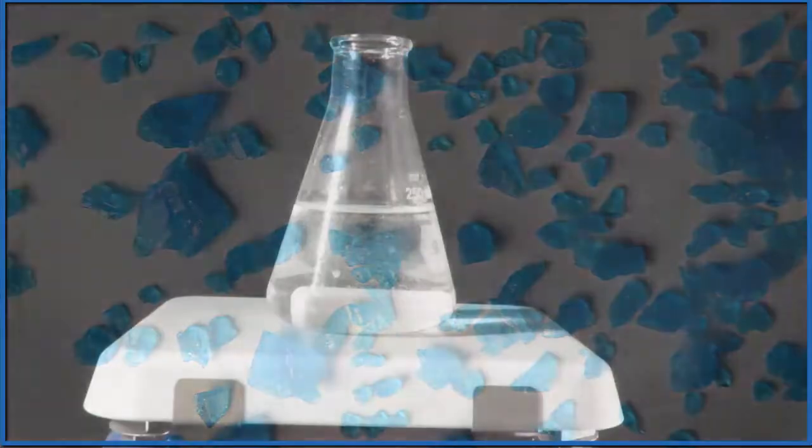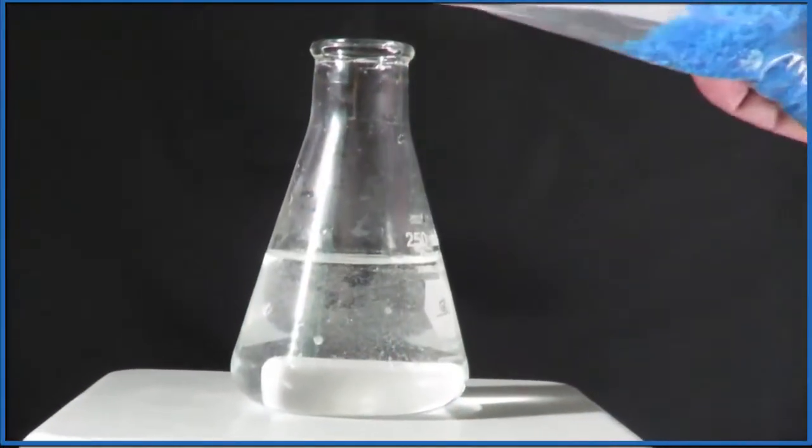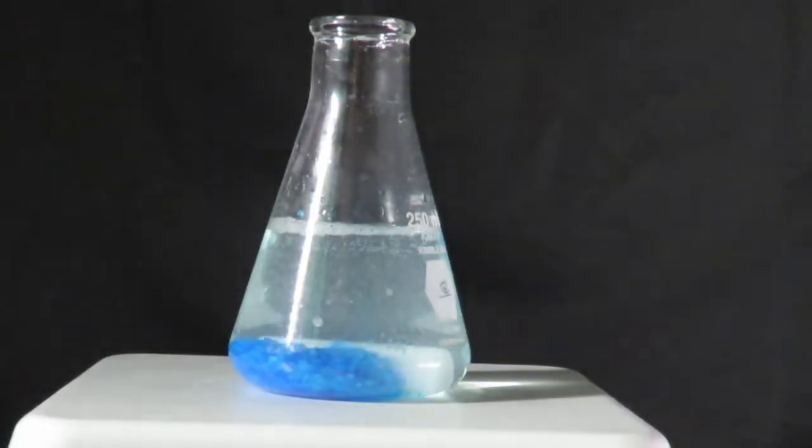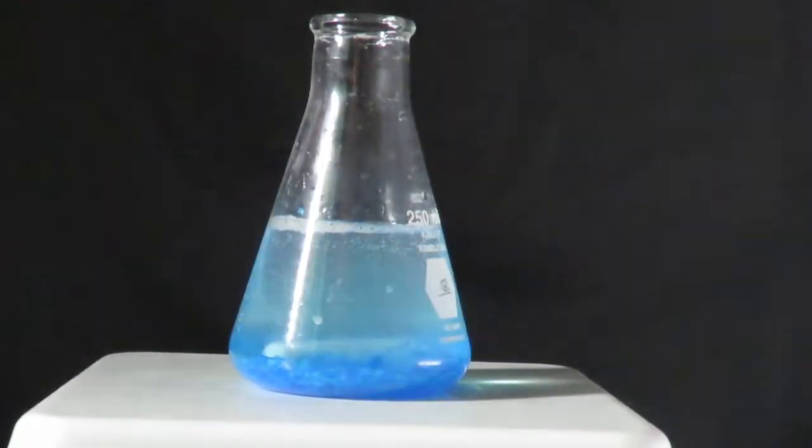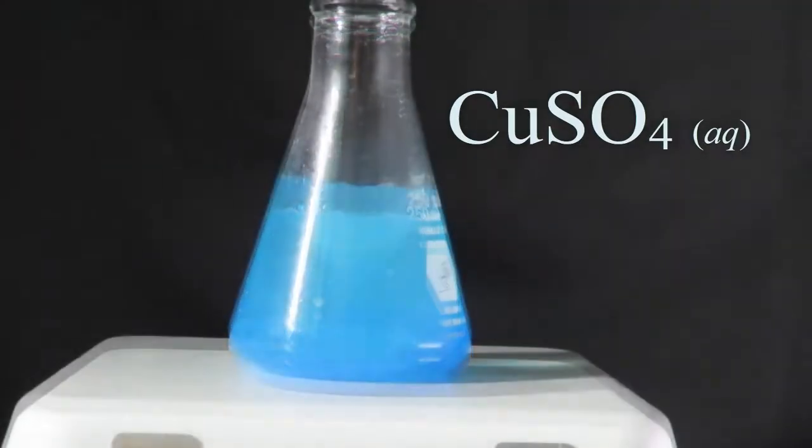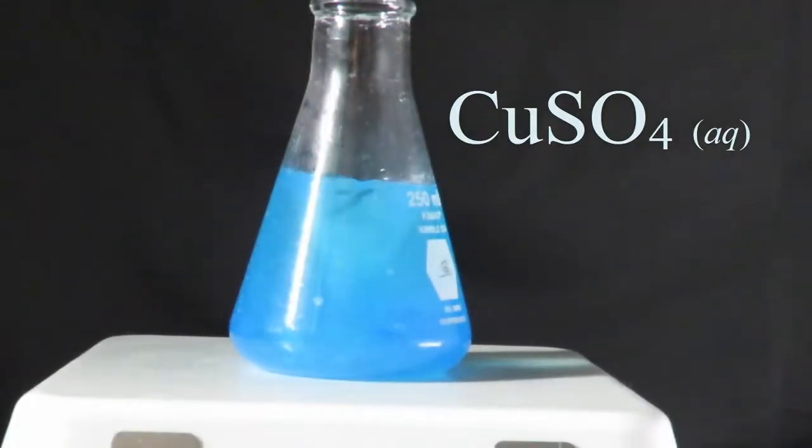So we take our copper sulfate and we put it in water. We're gonna stir this up for a while and the copper sulfate will dissolve, split apart into its ions, and that will give us an aqueous solution. Then we can put our magnesium metal in the solution for the reaction.